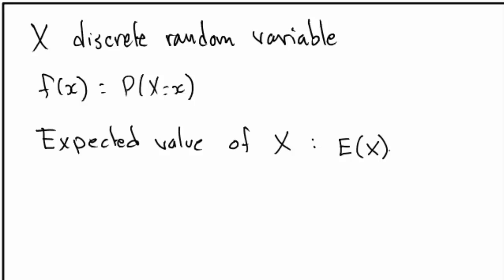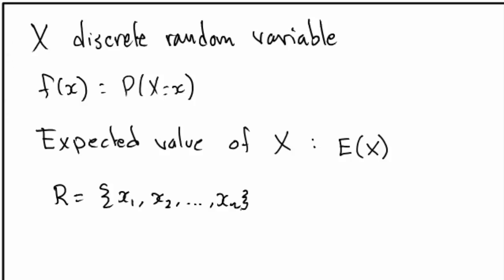Since x is discrete, let's begin by assuming it takes a finite number of values. So the range is x1, x2, all the way to some xn — n different values. We have a probability distribution function which tells us exactly the probability that x will take x1, x2, and so on.